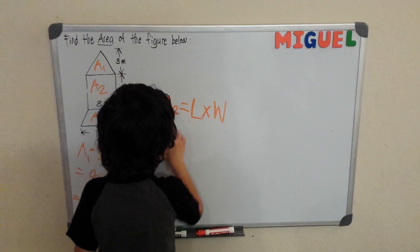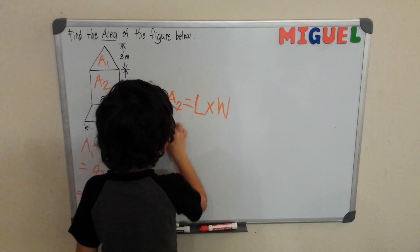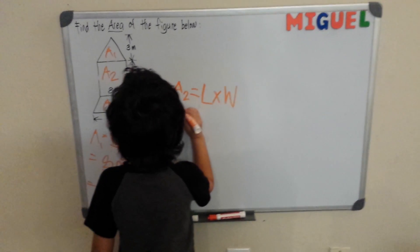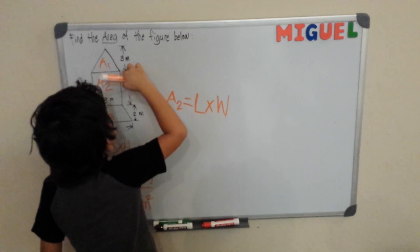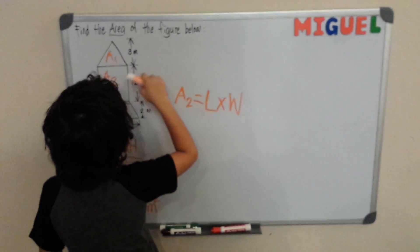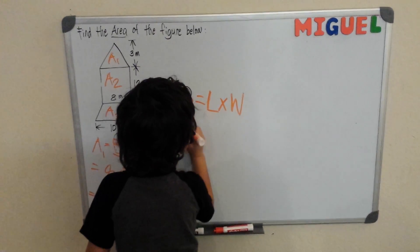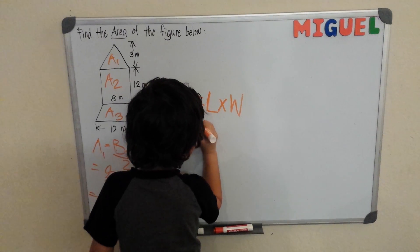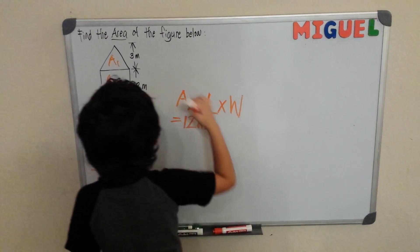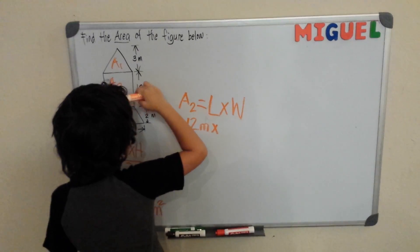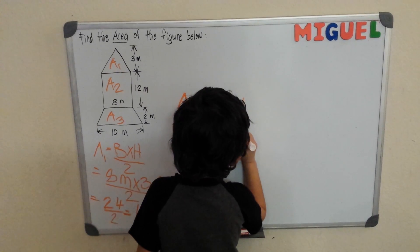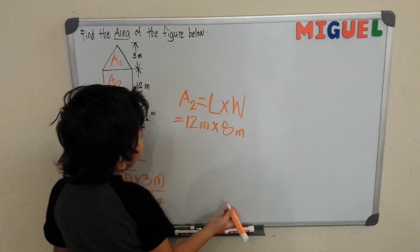Now, that's the length times width. Then it's equal to, our length will be 12 meters times, what is that? 8 meters.